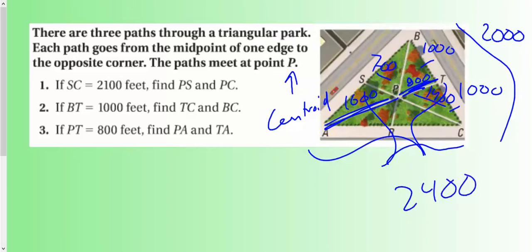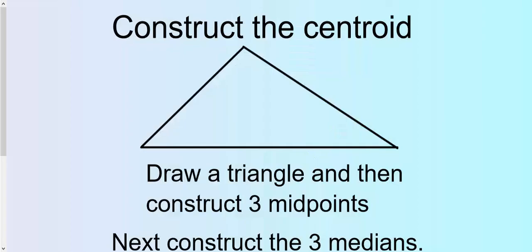And then the entire length here is going to be 2,400. So that will help you knowing those three relationships. You're either going to be cutting things into thirds or doubling or halving, depending on what they give you.